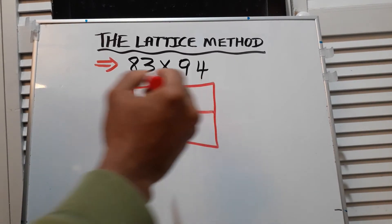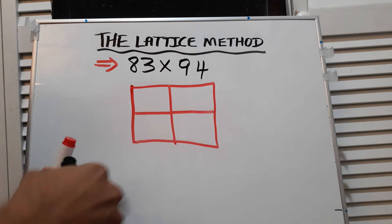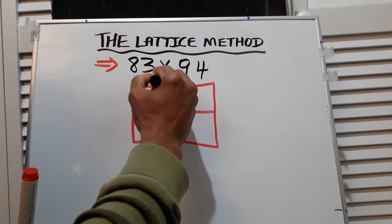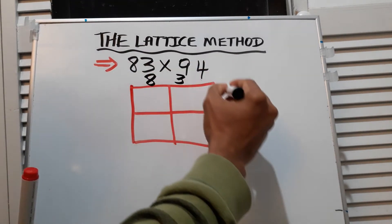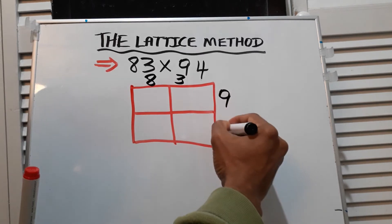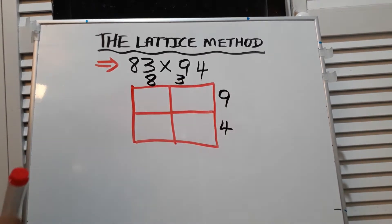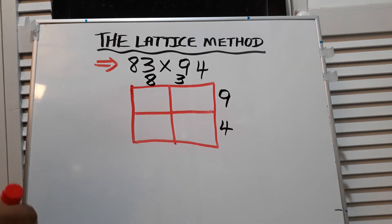In the middle, right? Then we put 83 on top, 94 on the bottom or the side.